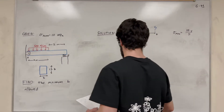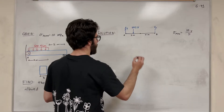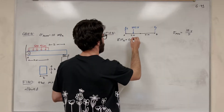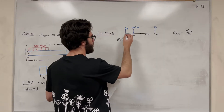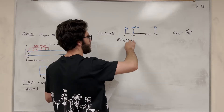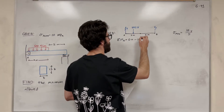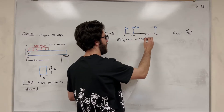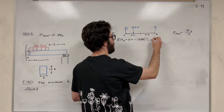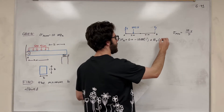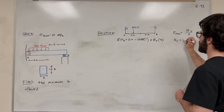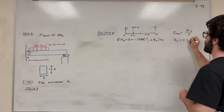We have two unknowns, so we can't use sum of forces in Y directly, but we can sum the moments. So let's solve for B_Y by taking the sum of moments about A and setting that equal to zero. The 1,000 N force pushes clockwise, so we subtract 1,000 N times its distance of 1 meter. B_Y pushes counterclockwise, so we add B_Y times its distance of 4 meters. Solving gives B_Y equal to 250 N.